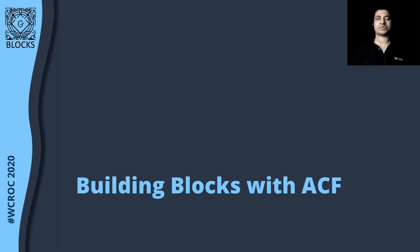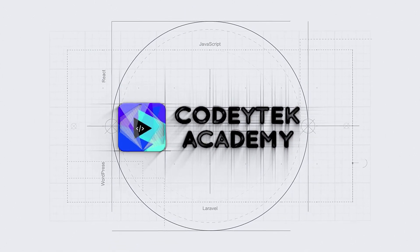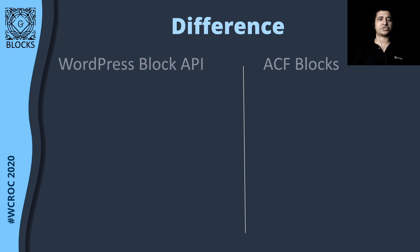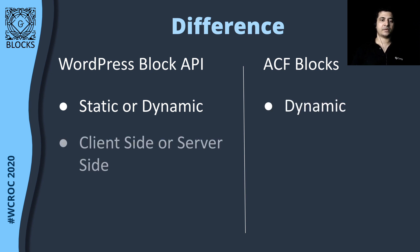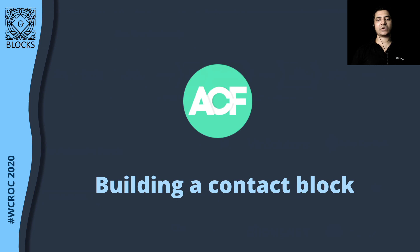Let's talk about building blocks with ACF. What's the difference? The WordPress block API can be static or dynamic. However, ACF blocks is just dynamic. WordPress block API has client-side or server-side rendering. However, ACF blocks is only server-side. Let's go ahead and build a contact block and see how that goes.